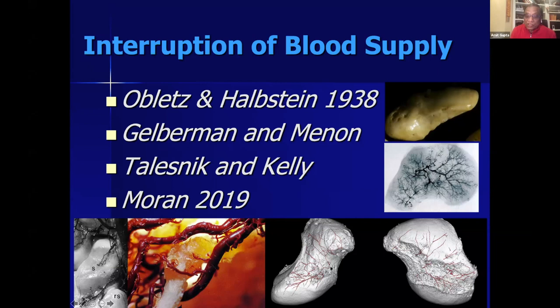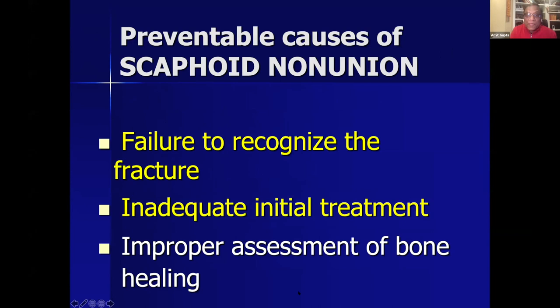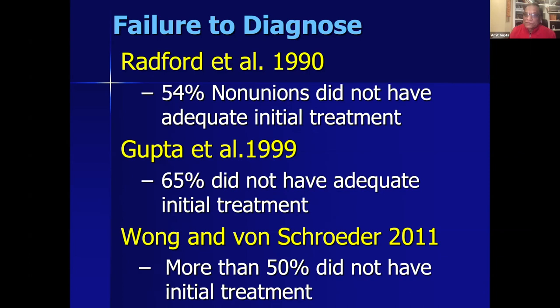Other preventable causes of scaphoid non-union include failure to recognize the fracture, inadequate initial treatment, and improper assessment of bone healing. In all series, over 50% did not seek adequate initial treatment. In Radford's series from Cambridge and our published studies, 65% did not have adequate initial treatment. Langolff and Anderson showed that delay in diagnosis of less than four weeks results in union rates the same as acute fractures. If delay in diagnosis is more than four weeks with non-operative treatment, there is a higher rate of non-union.